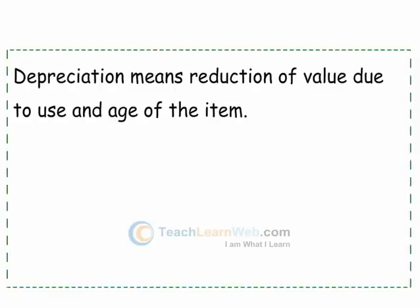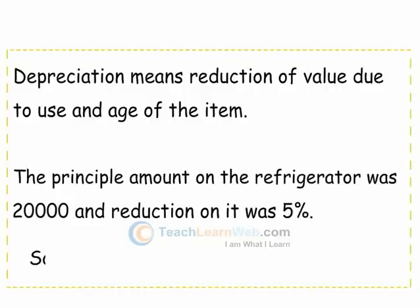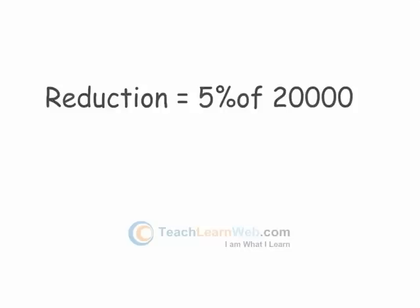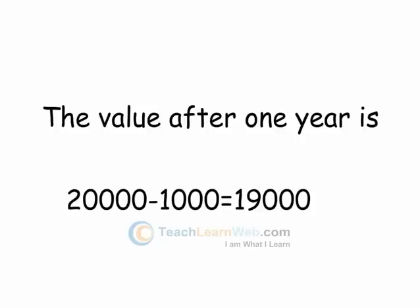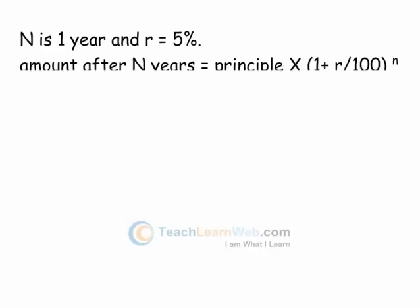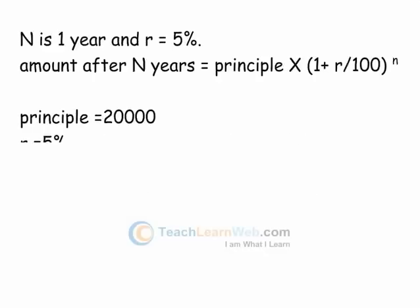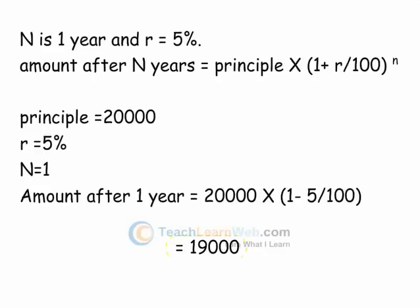The principal amount on the refrigerator was Rs 20,000 and the reduction on it was 5%. We can directly find the value using the formula, where N is 1 year and R is equal to 5%. If the value is appreciated, that is increased, then the formula becomes A = P(1 + R/100)^N.